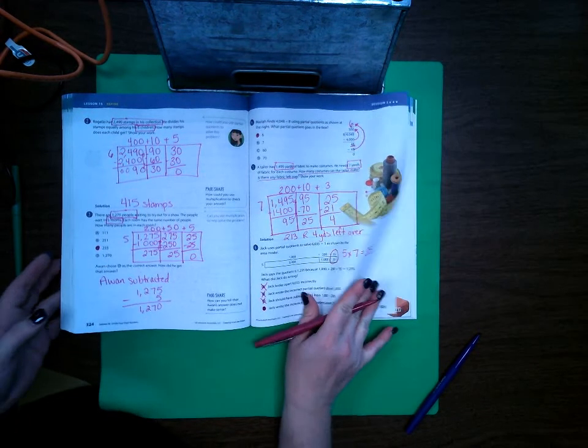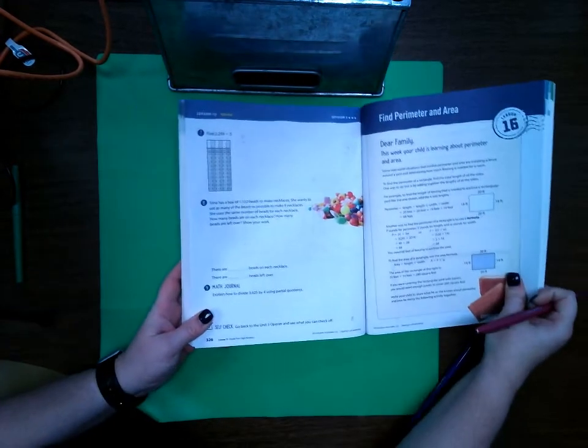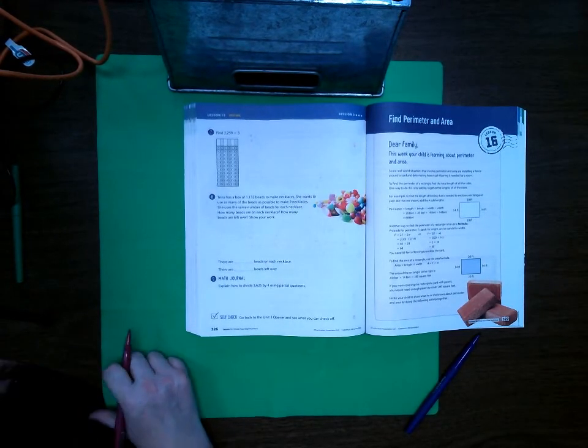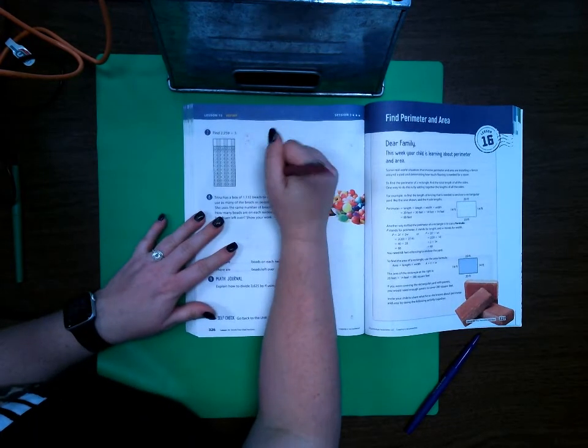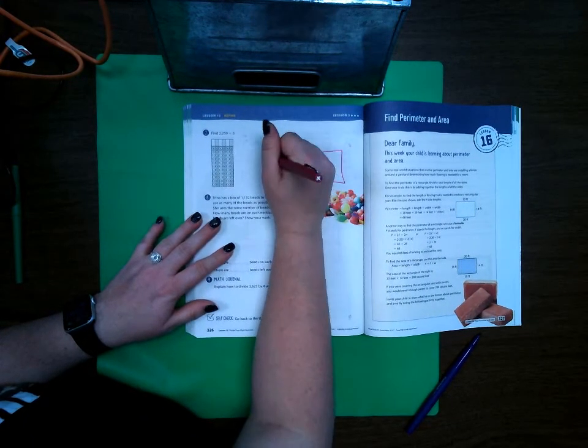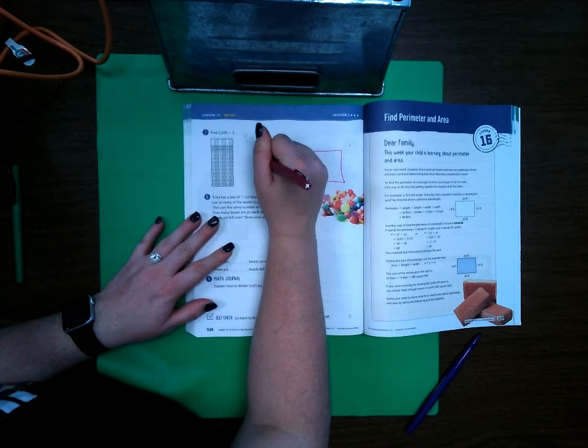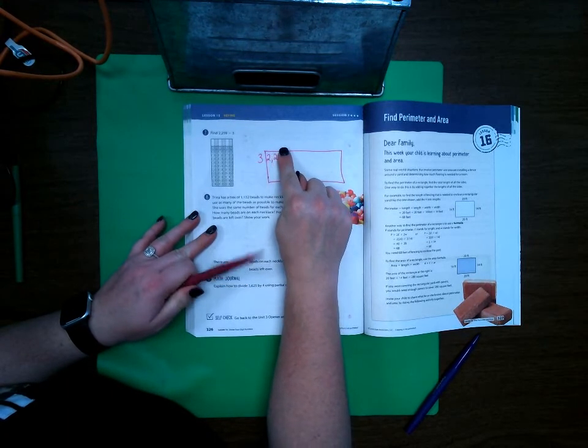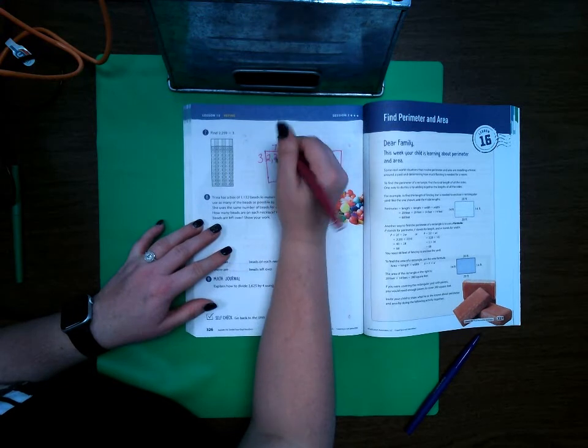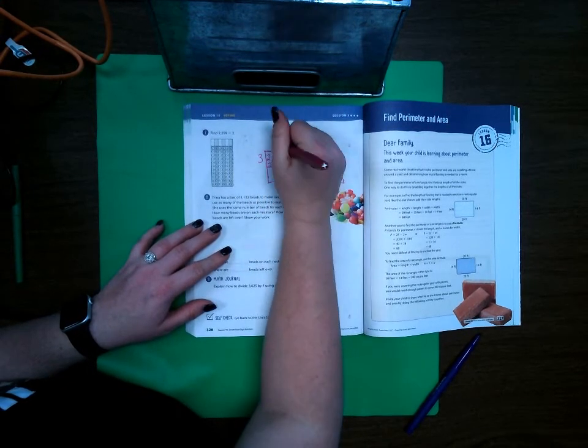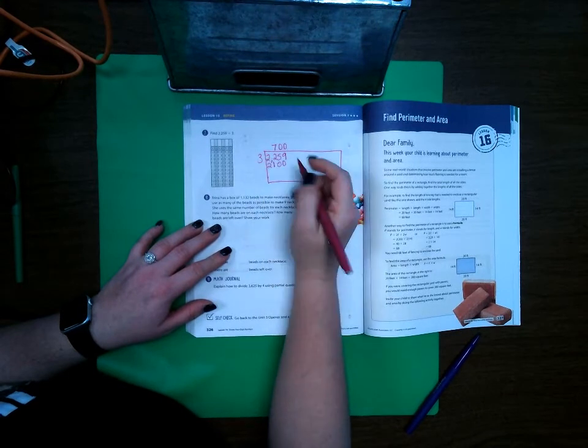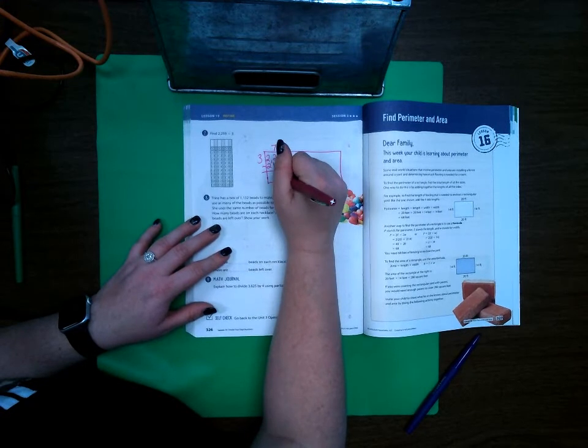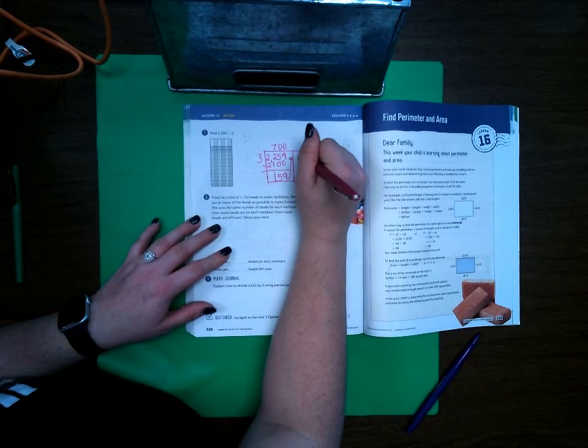Last page, page 326. On page 326: 2,259 divided by 3. Go ahead and make my area model. Can 3 go into 2? No. Can 3 go into 22? Yes, by 7. Add my two zeros here. So 3 times 700 is 2,100. We've got 9, 5, and 1 left over. Bring it up, 159.